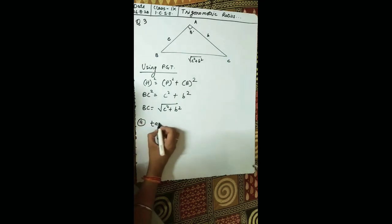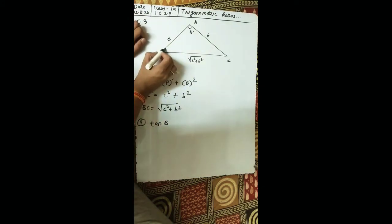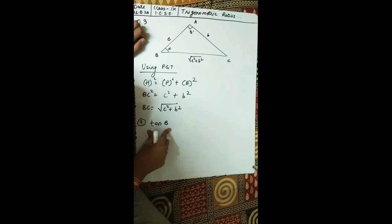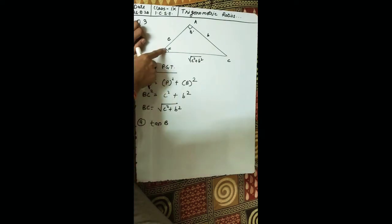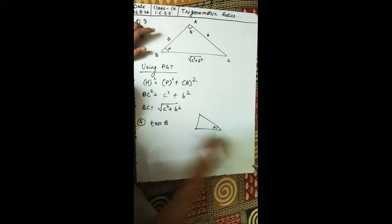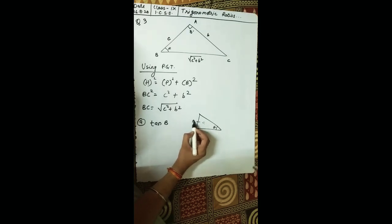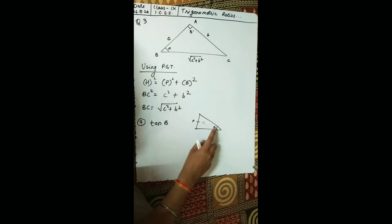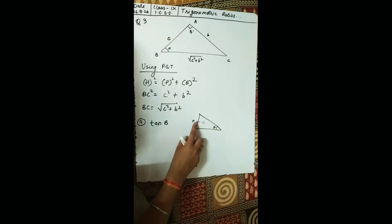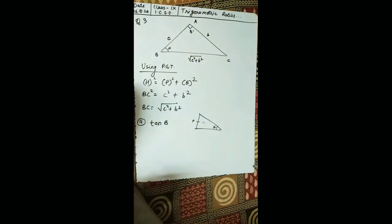Now let's find tan B. Our angle theta is at vertex B. As I explained before, if theta is at a vertex, then the side opposite to theta is always the perpendicular. So in this triangle, with theta at B, the opposite side becomes the perpendicular, and the hypotenuse remains fixed.